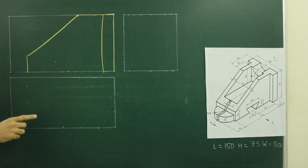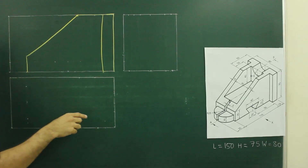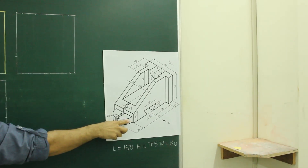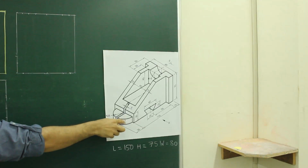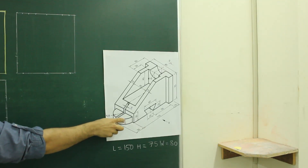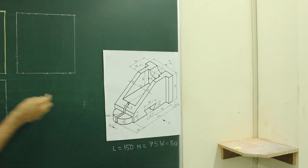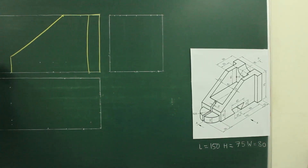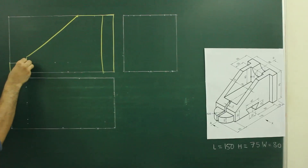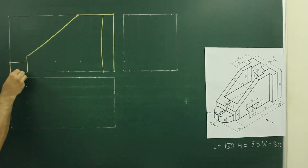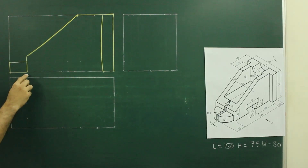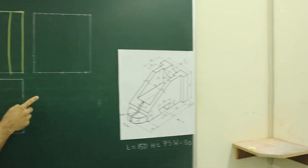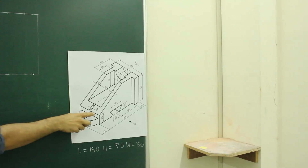After that, if you see the main diagram, this part is a rectangle with height 15, so we'll take height 15 and draw this rectangle. Now after this we have to draw the dovetail slot.